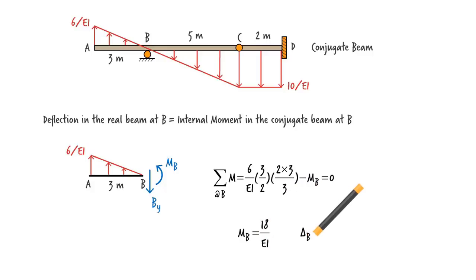Therefore, deflection at B in the real beam is... Assuming the unit of length is meter, the deflection is given in meter. The positive sign indicates that the beam deflects upward at B.